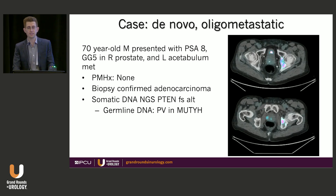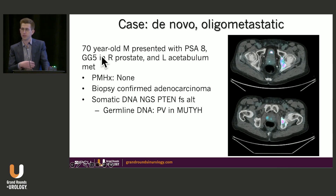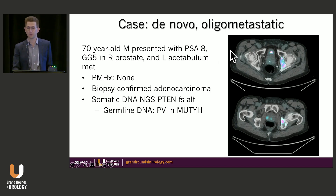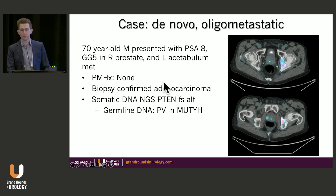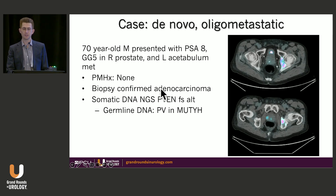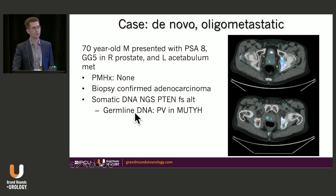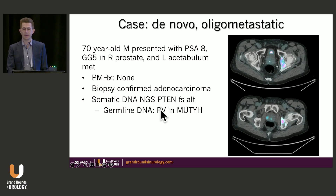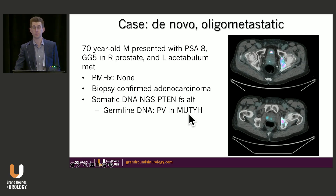The second case looks at de novo presentation of oligometastatic disease. This is a 70-year-old from Colorado who came to MD Anderson. His PSA is eight, he has grade group 5 disease in his right prostate, and a left acetabular metastasis clearly evident by PSMA PET. We biopsied the metastatic site to rule out atypical variant histology — it showed adenocarcinoma. Tumor tissue sequencing found a PTEN alteration. Germline DNA sequencing found a pathogenic variant in a gene not of known significance for prostate cancer, so it did not influence treatment decisions.